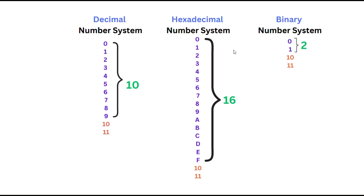Now let's understand the hexadecimal number system, which we don't use in general life. In this system there are 16 symbols — after 9 we write A, B, C, D, E, F, where A represents 10, B is 11, C is 12, D is 13, E is 14, and F is 16. In hexadecimal too, when we consume all symbols from 0 to F, to write the next number we must increase the number of digits and reuse the available symbols.